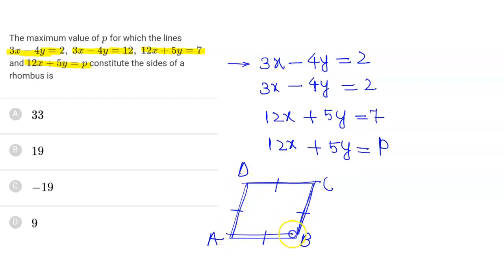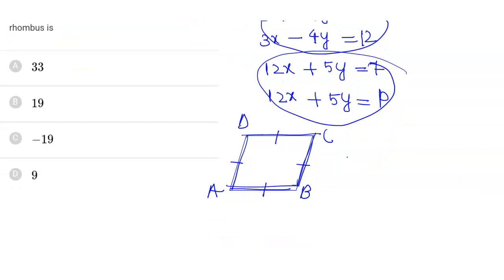For two parallel lines of the form ax + by + c = 0 and ax + by + d = 0, we can find the distance between them using the distance formula.